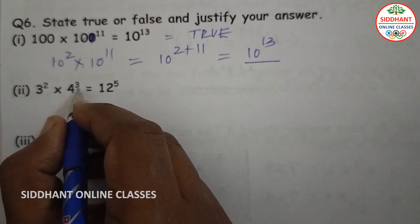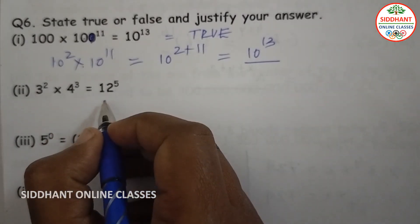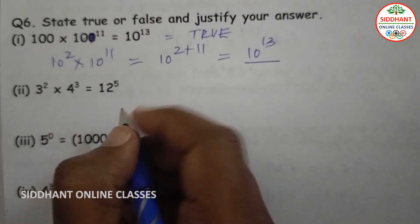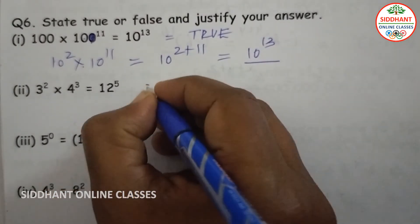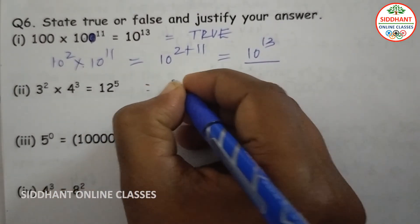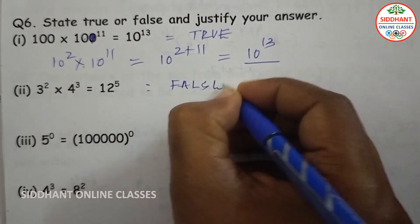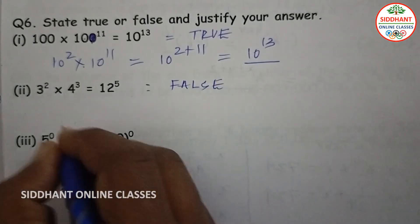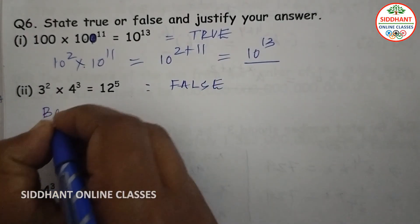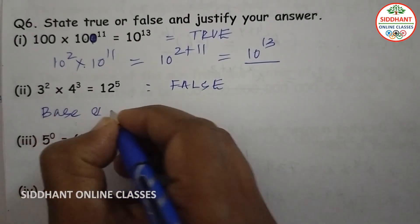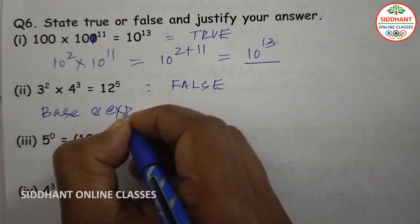Second statement: 3 to the power of 2 into 4 to the power of 3 equals 12 to the power of 5. The statement is false, because the bases and exponents are not the same, so they cannot be directly combined.